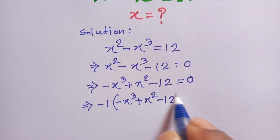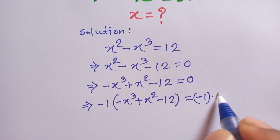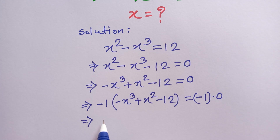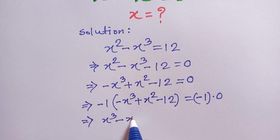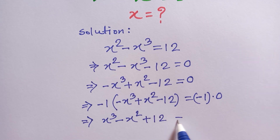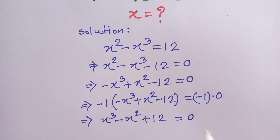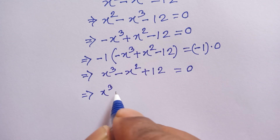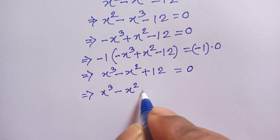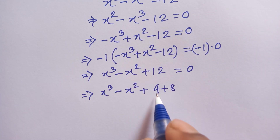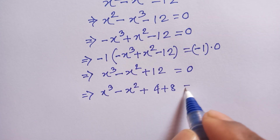We multiply both sides by negative one, so minus one times the expression gives us: positive x cubed minus x squared plus 12 is equal to 0. Now this 12 can be written as 4 plus 8.